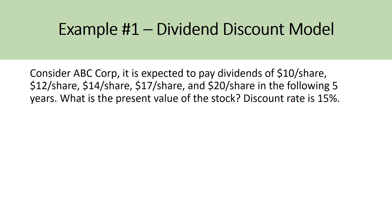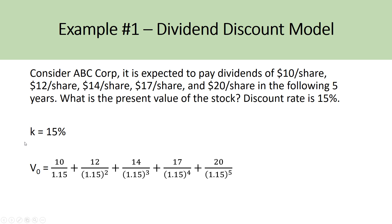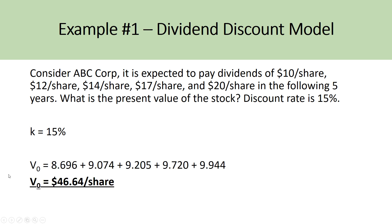Let's work through an example. Consider ABC Corp, expected to pay dividends of $10, $12, $14, $17, and $20 a share in the following five years. What is the present value of the stock, given a discount rate of 15%? The discount rate K equals 15%, and we have dividends for years one through five. We input all of this into the present value formula, discount each dividend, sum them all up, and get a value for the stock of $46.64 a share.